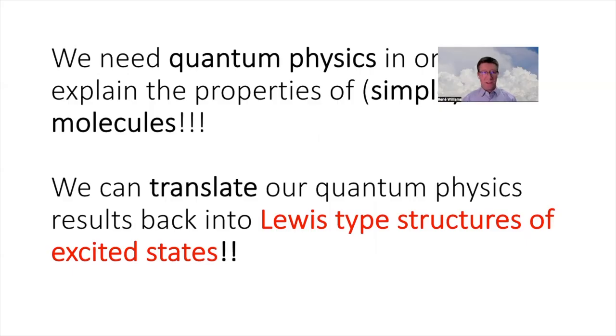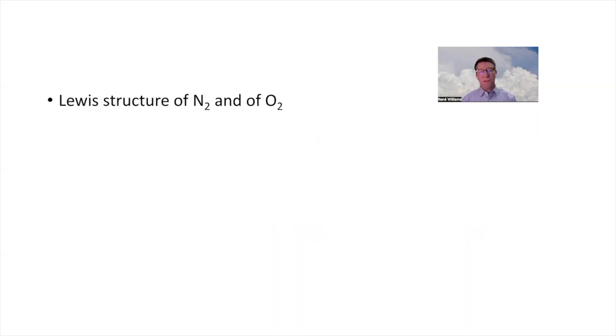We will start with something simple. We will start with two simple molecules, N2 and O2. Please think about their Lewis structures. So please, in your head or on paper, draw the Lewis structures of molecular nitrogen, N2, and of molecular oxygen, O2.